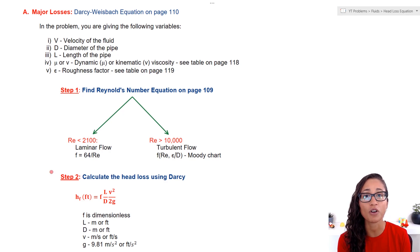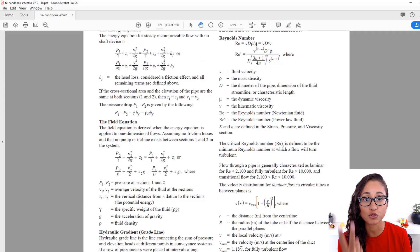Now, let's go over the steps on how we're going to calculate the head loss. First, we need to find Reynolds number because we need to determine if this flow is laminar or turbulent. The equation for Reynolds number is provided to you on the reference manual on page 109.